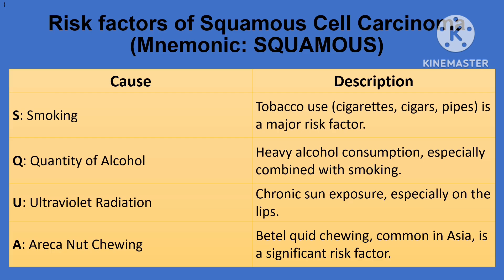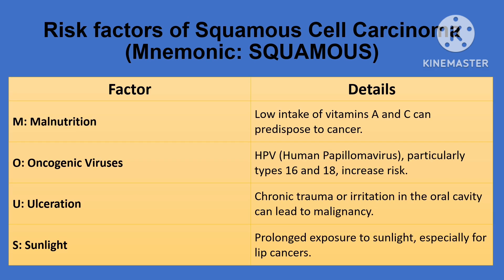We can break down the key risk factors for oral cancer using the mnemonic SQUAMOUS: S stands for smoking, Q for quantity of alcohol, U for ultraviolet radiation particularly affecting the lower lip, A for areca nut chewing, M for malnutrition, O for oncogenic viruses especially HPV strains 16 and 18, U for ulceration, and S for sunlight.